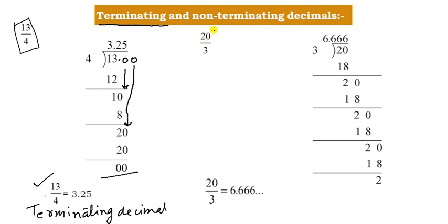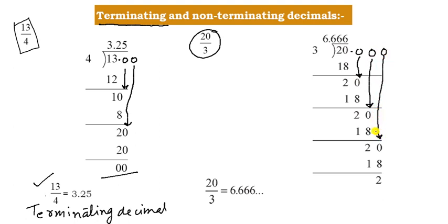Now what about 22 upon 3? When 22 is divided by 3, three 7s are 21. We get remainder 2. We place the decimal point and bring down 0. Three 6s are 18, remainder 2 again. Bringing 0 down, three 6s are 18 again, and so on. This is called a Non-Terminating Decimal.